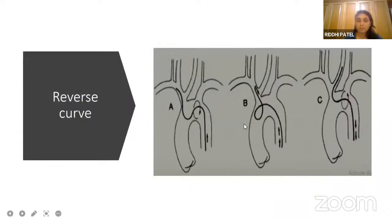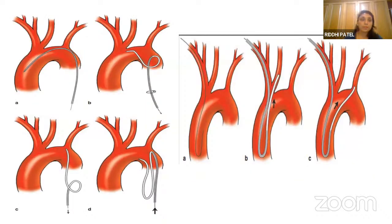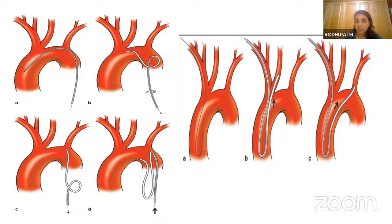The reverse curve system is also available. The catheter is already into the common origin, then torqued anticlockwise to take the reverse shape, and when pulled it will directly go into the left CCA. When cannulating via the radial route, it is a little easier than the femoral route for bovine arches. The Simons catheter goes directly into the ascending aorta, and when pulled it will directly go into the CCA.